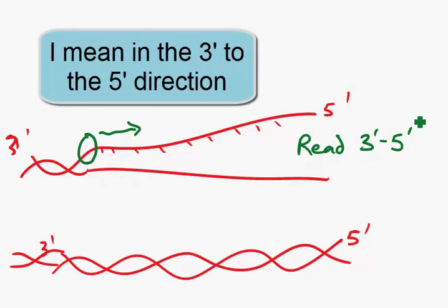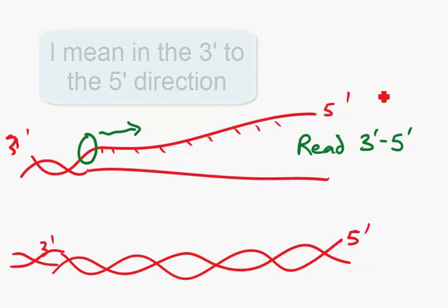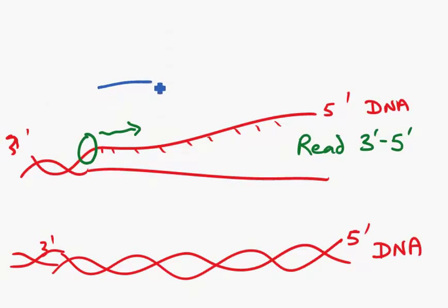This means, because of the anti-parallel nature, if this is our DNA, then our mRNA is created from 5' to 3'. Here is our mRNA.